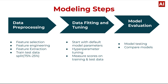Modeling steps: The machine learning modeling steps are data processing, data fitting and tuning, and model evaluation. In data processing, we use feature selection, feature engineering, feature extraction, and train-test split. Data fitting and tuning starts with default model parameters, then hyperparameter tuning and measuring scores on training and test data. Finally, model evaluation involves model testing and comparing models.